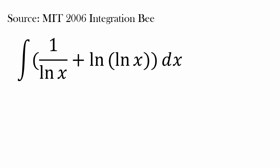The integral is 1 over natural log of x plus natural log of natural log of x, dx. How do we even integrate this? How do we even start? 1 over natural log of x — I don't think you can integrate this using elementary functions. You can integrate natural log of x, but 1 over natural log of x changes things completely.